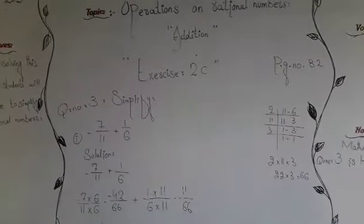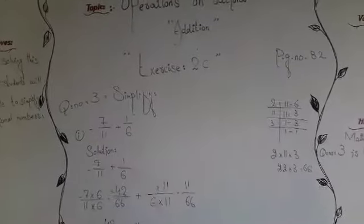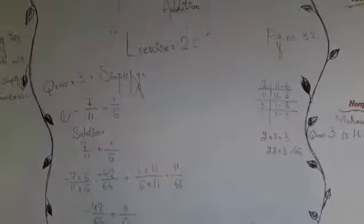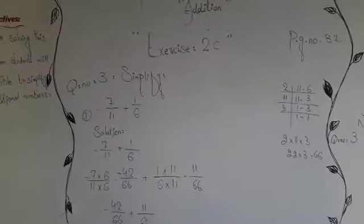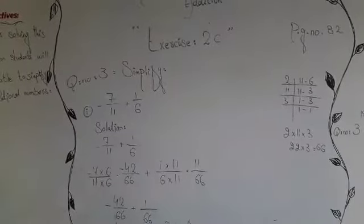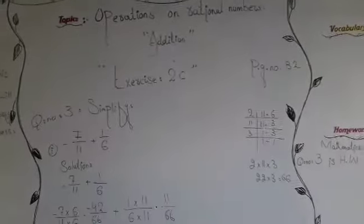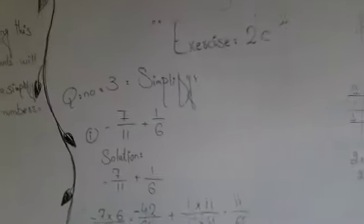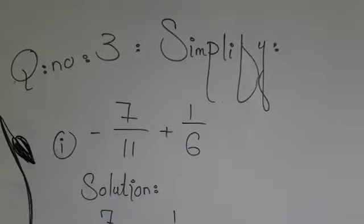It is like question number two. If you know how to solve question number two, this question number three is much easier for you. It is halwa for you. What are the objectives of this question? After solving this question, you will be able to simplify rational numbers. Now let's start question number three. The first part is minus seven over eleven plus one over six.